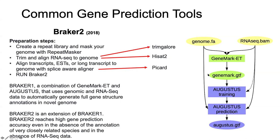Here's the breakdown of how BRAKER2 works: you need your genome, your genome information, and your RNA-seq data, and all of that gets combined into a final prediction of genes in your organism.